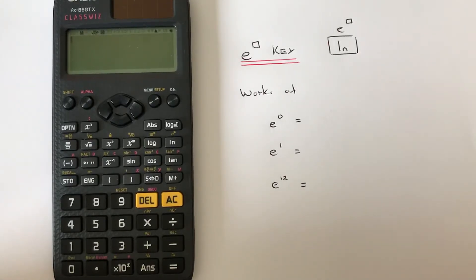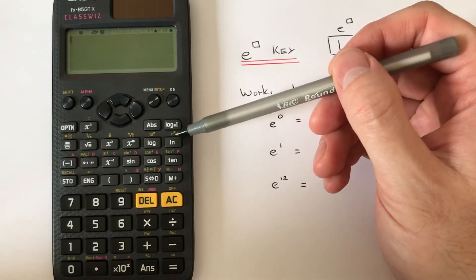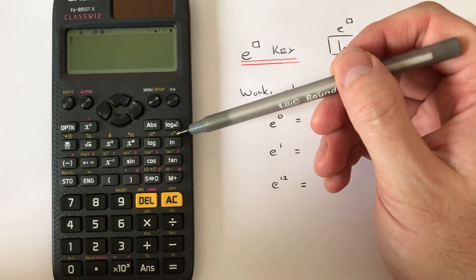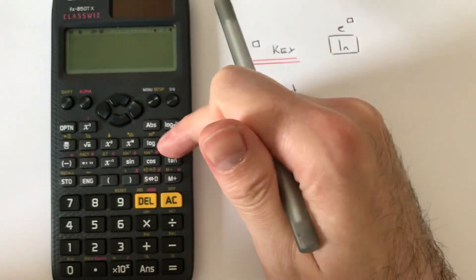To locate the e key, you need to look on the second row of the scientific functions, and it is the second function of the natural log key. So we need to press shift natural log.